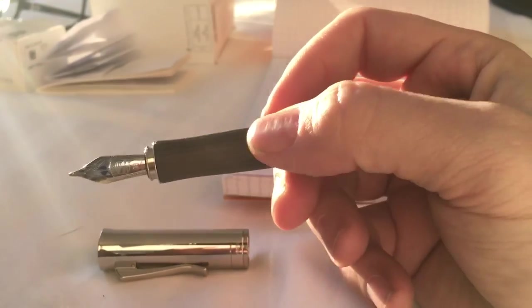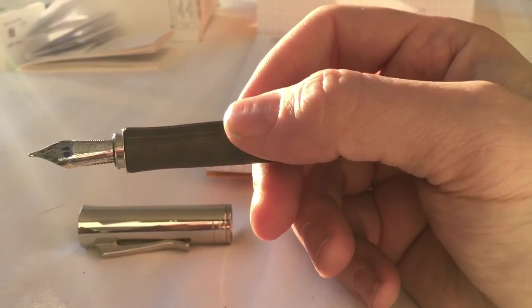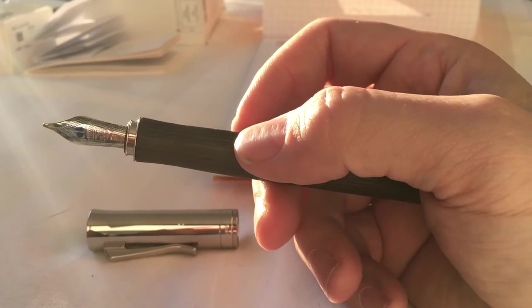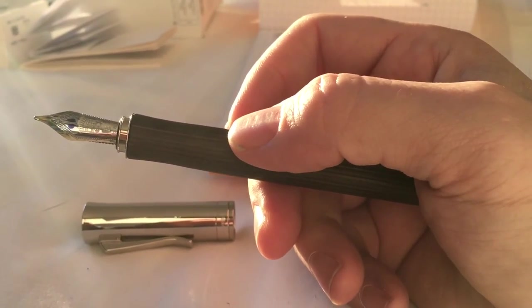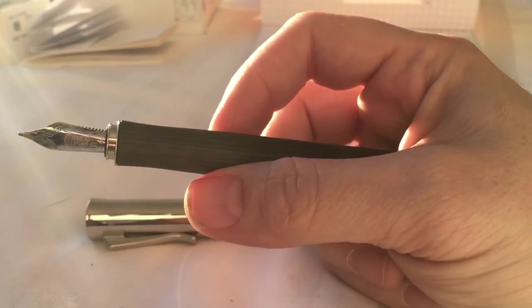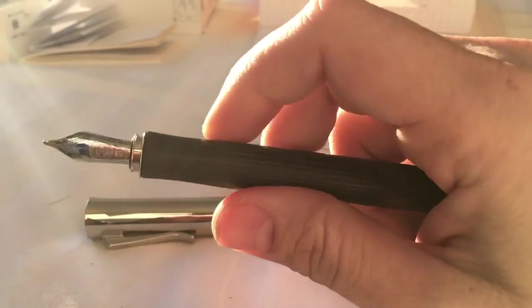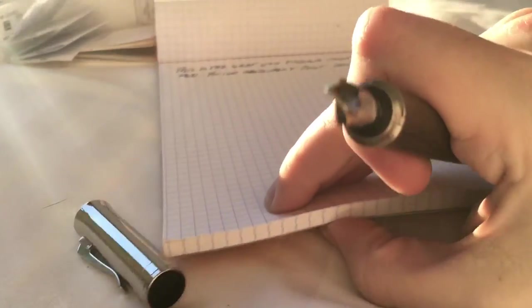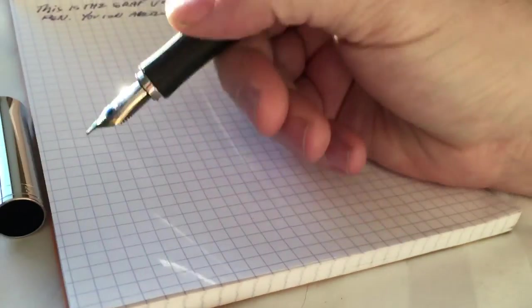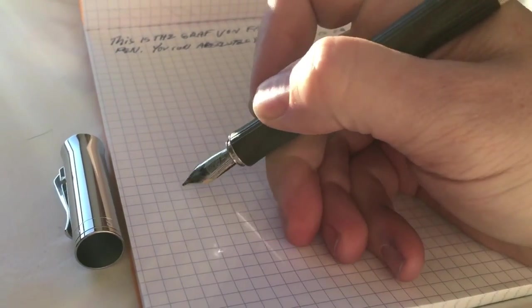Writing with it is just a dream. This nib is—I believe it's rhodium, or plated 18 karat gold I believe. I could be wrong about that—I'm not as knowledgeable as some people are in fountain pens. I just wanted to do an amateur review of this. Writing with this pen is just fantastic. It writes really smoothly.